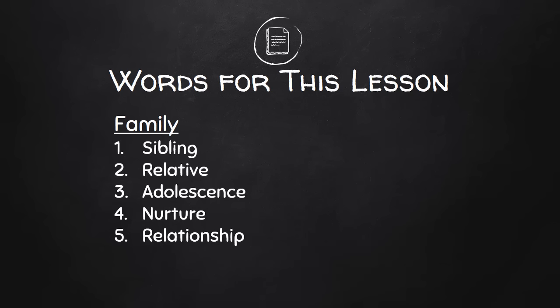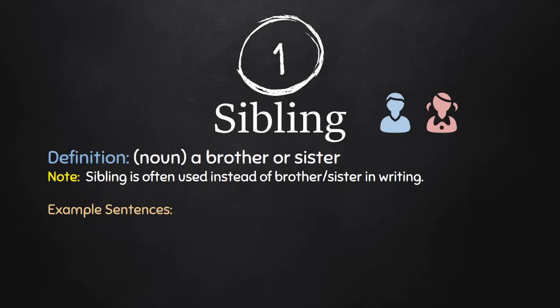You might know some of these words already, but you will likely learn some new combinations or collocations, or maybe a new example sentence that uses the word in a way you hadn't thought of before. Let's look at word number one: sibling. The definition is a brother or sister. Sibling is often used instead of brother or sister in writing.